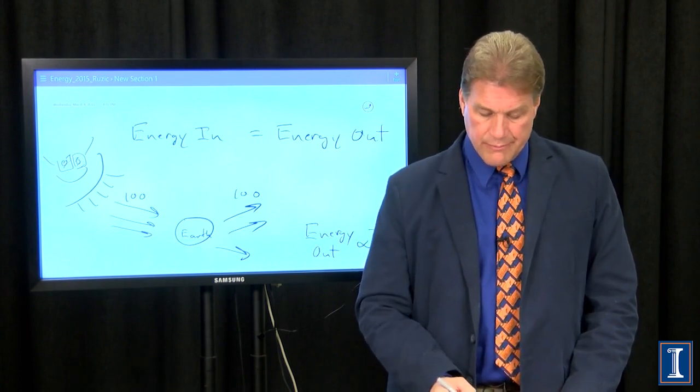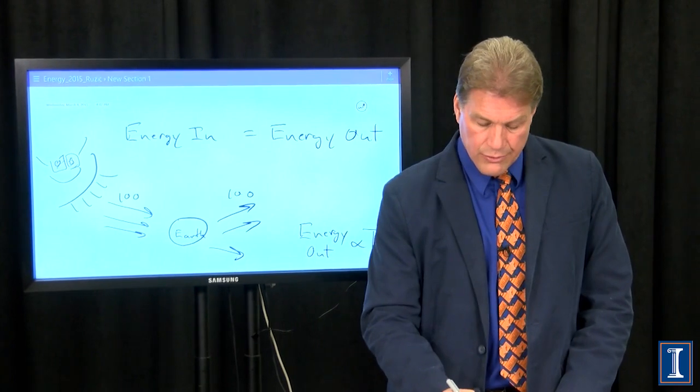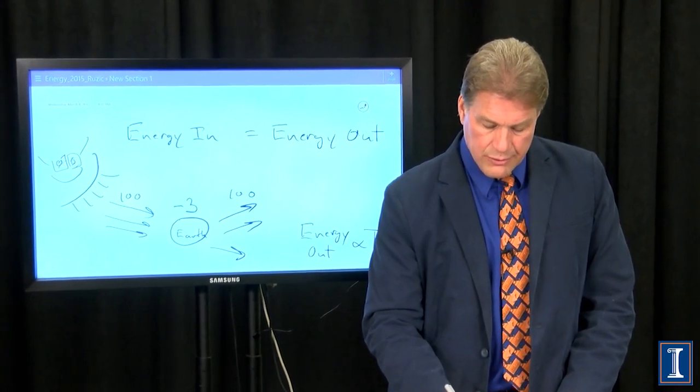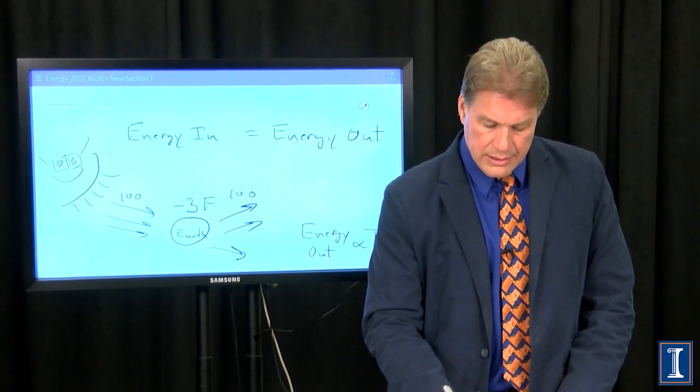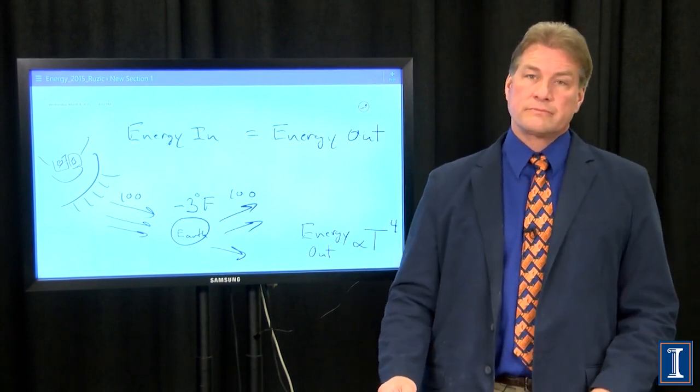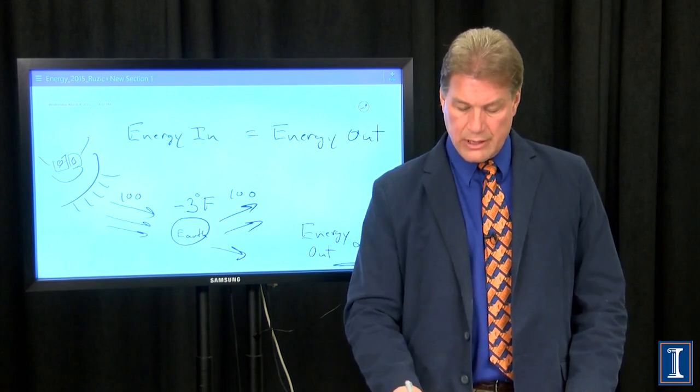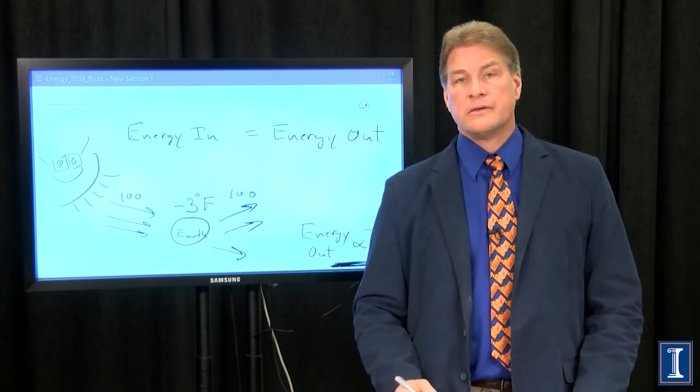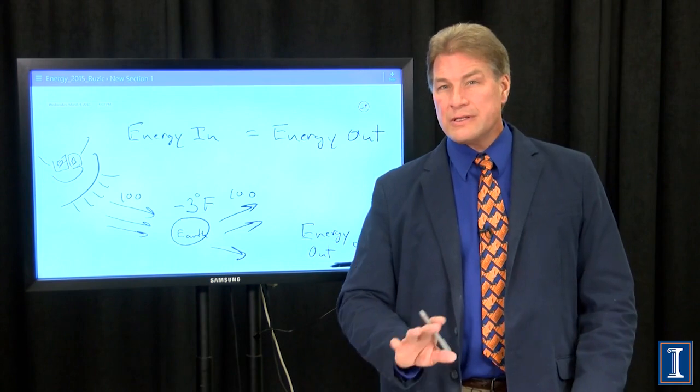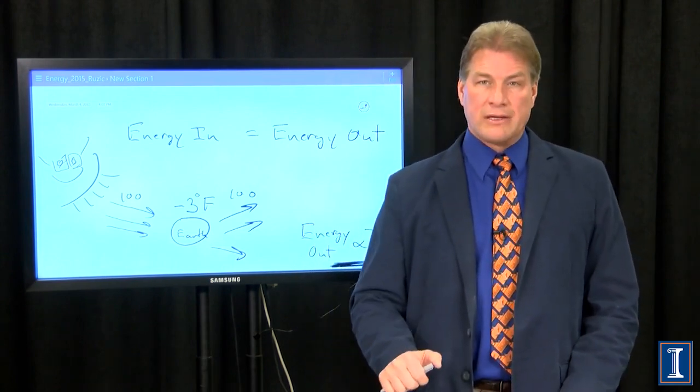If there is no atmosphere, the energy coming into the Earth equals the energy out of the Earth and the average temperature of the Earth is minus 3 degrees Fahrenheit. That's what this equation, that's what this equation right here would tell us.